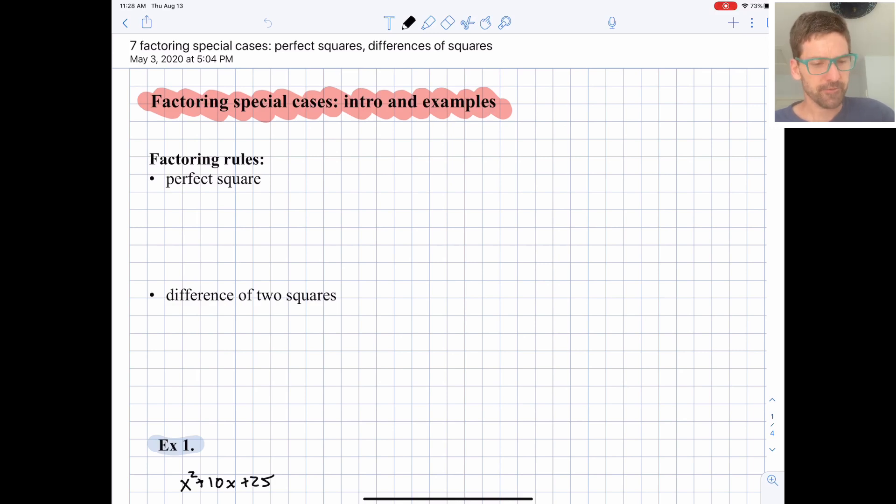A little reminder of perfect squares. If we have (x + a)² for example, that is definitely not equal to x² + a². That's the biggest math mistake of all time in high school, I think.